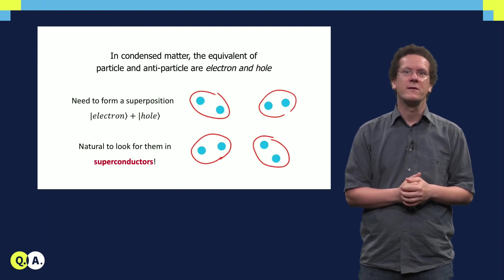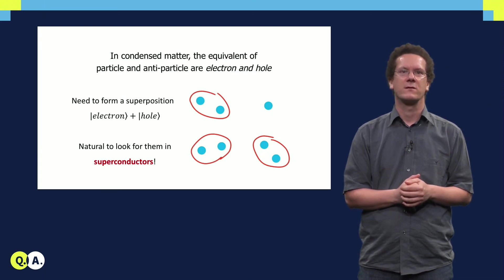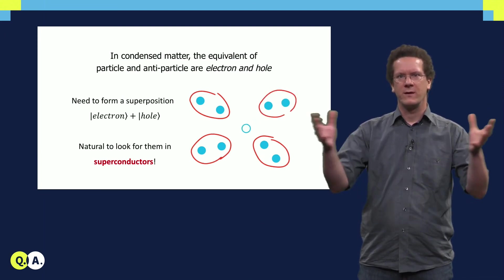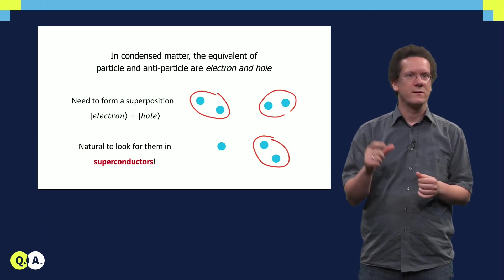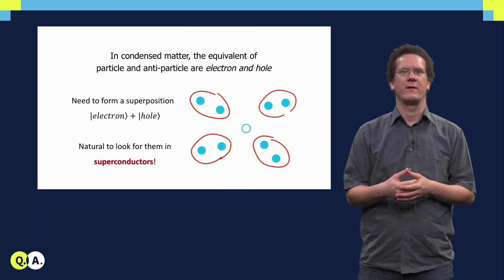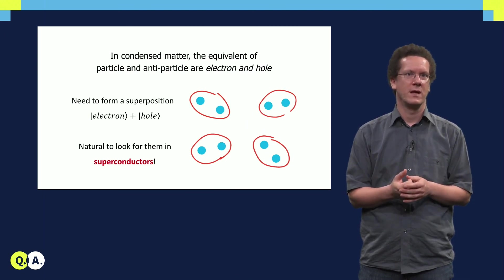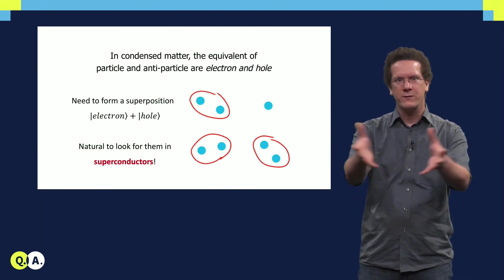It however turns out that a good system for Majoranas are superconductors. In superconductors we have a sea of Cooper pairs. Cooper pairs are states consisting of two electrons.